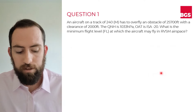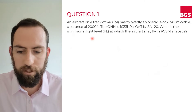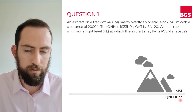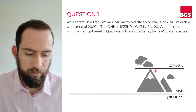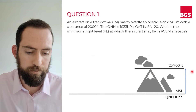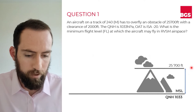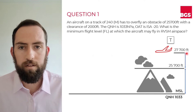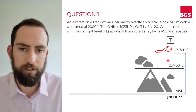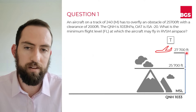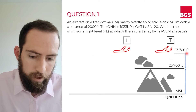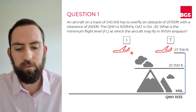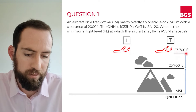Let's get a clearer image of what the scenario in the question is portraying. We have our mean sea level where our QNH is 1033, and we've got quite a big mountain which measures 25,700 feet above mean sea level. We have to clear that mountain by 2,000 feet, so the height that our aircraft is truly at has to be 27,700 feet. But what is our altimeter going to be telling us when we set the QNH for us to be at this true altitude?